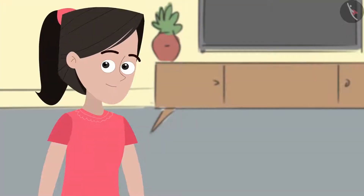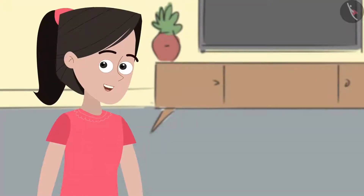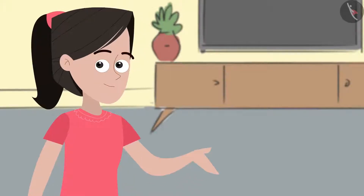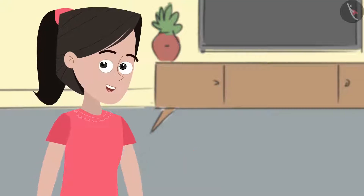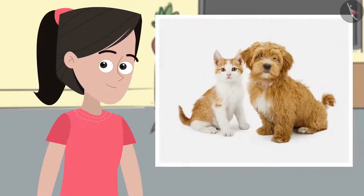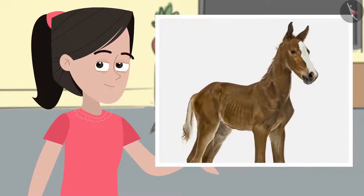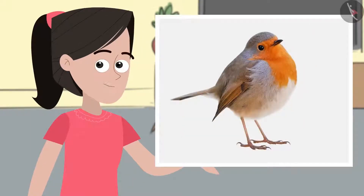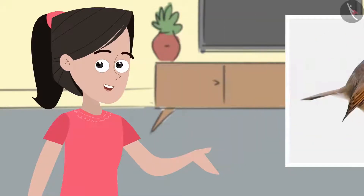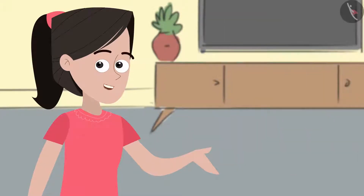Hi friends! How are you all today? Remember, Mummy and Kabir Bhaya had explained to us how some organisms like hydra and amoeba reproduce asexually? What I am still wondering is how animals such as dogs, cats, horses, lions, or for that matter even birds reproduce and give birth to their young ones. Are you curious too? Come on, let's go and ask Mummy.